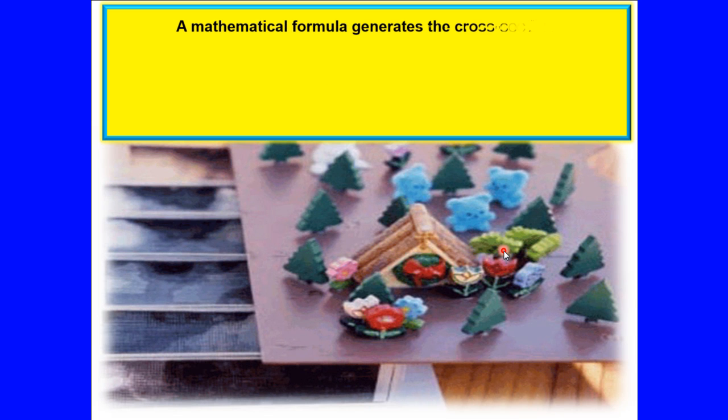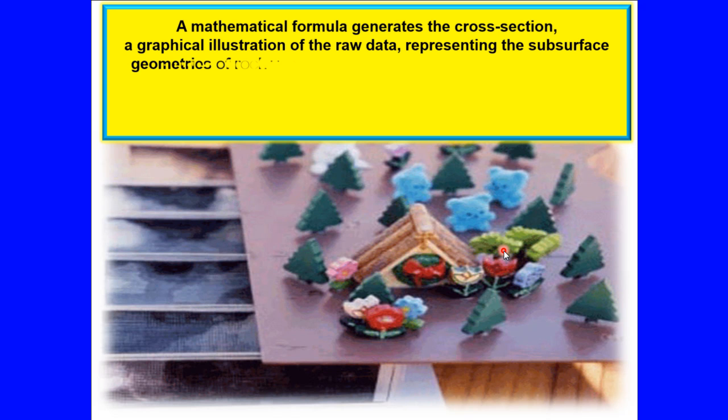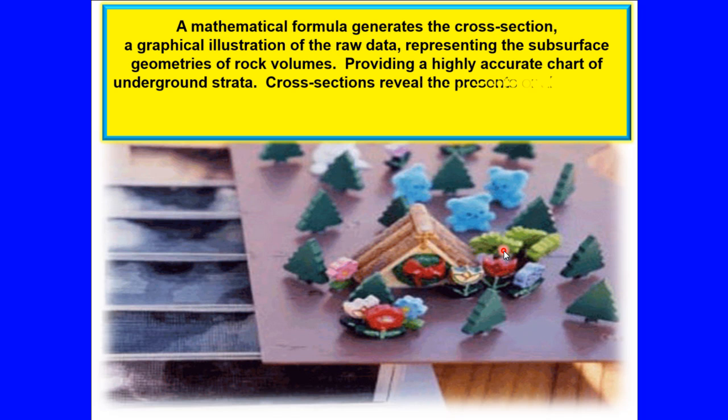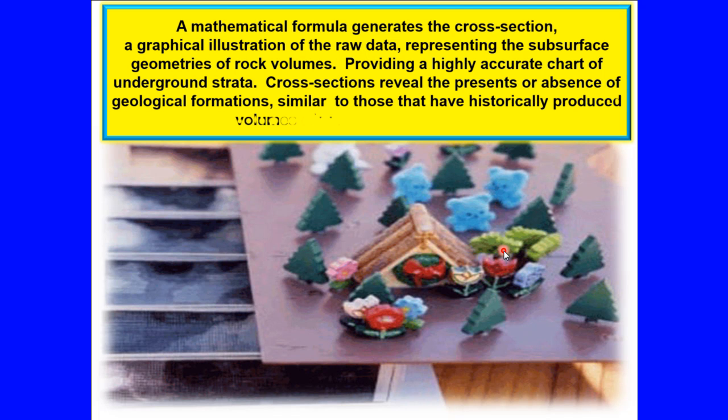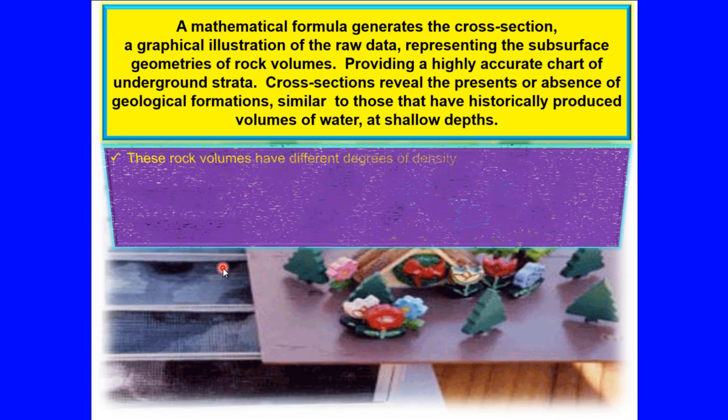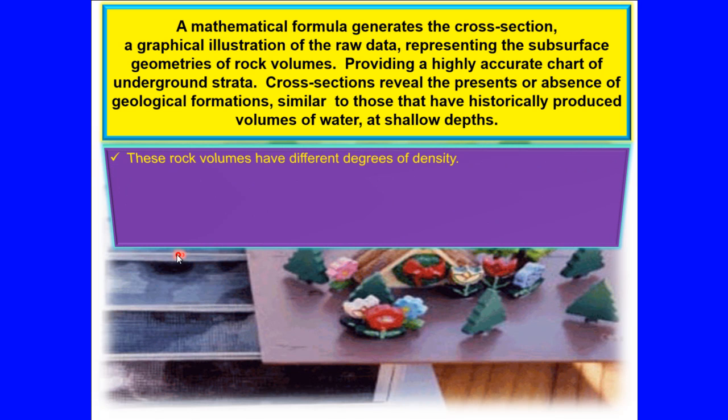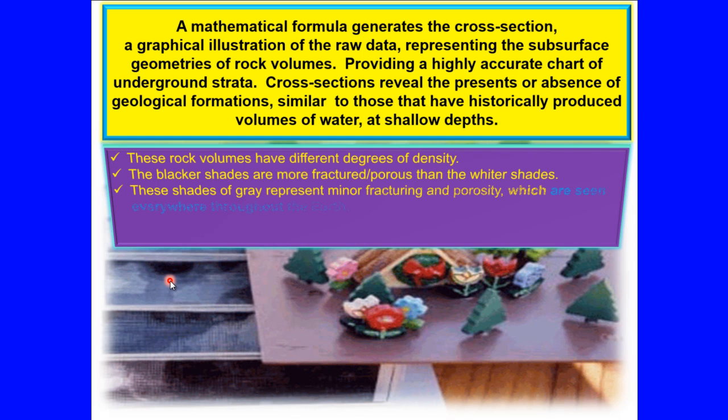A mathematical formula generates the cross section, a graphical illustration of the raw data representing the subsurface geometries of rock volumes. Providing a highly accurate chart of underground strata, cross sections reveal the presence or absence of geological formations similar to those that have historically produced volumes of water at shallow depths. These rock volumes have different degrees of density. The blacker shades are more fractured porous than the whiter shades.